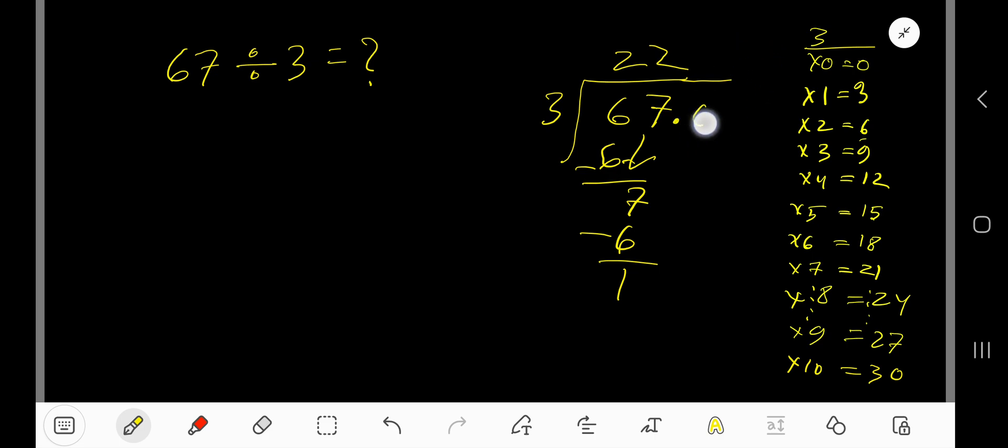Place the decimal, then add number of zeros. Bring down the first zero. Before the zero there's a decimal. Decimal must come to the quotient directly. 3 goes into 10 how many times? 3 times. 3 times 3 is 9. Subtract 1.